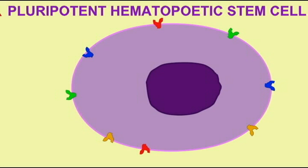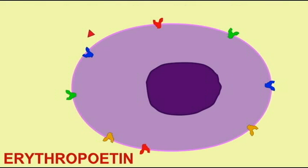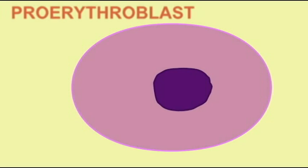When the pluripotent hematopoietic stem cells of the bone marrow are stimulated by the hormone erythropoietin, this causes them to differentiate through a number of stages, such as proerythroblasts, reticulocytes, to become the red blood cells or erythrocytes.